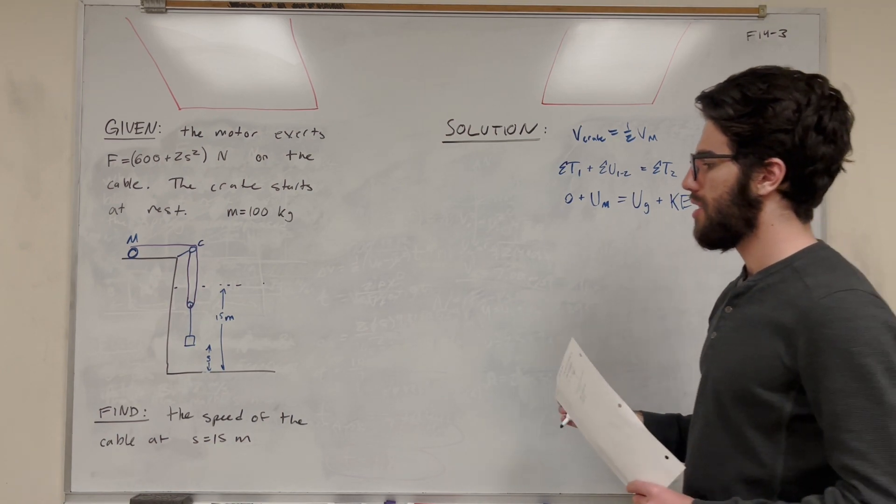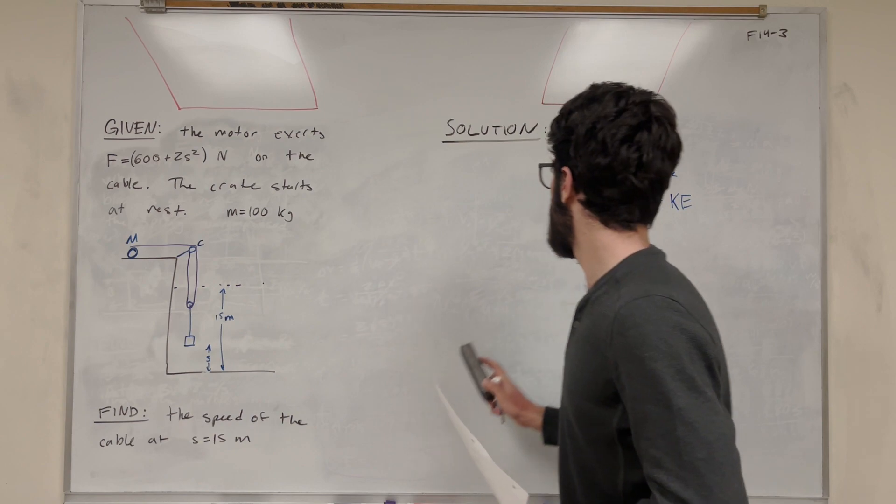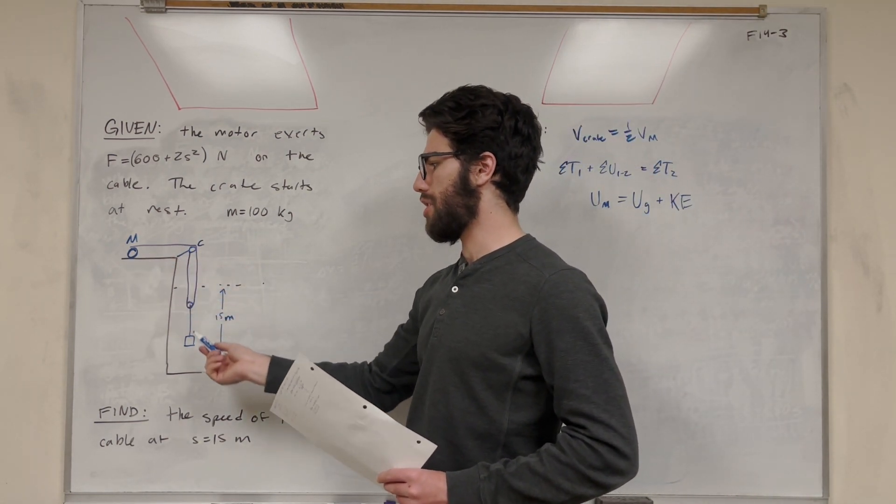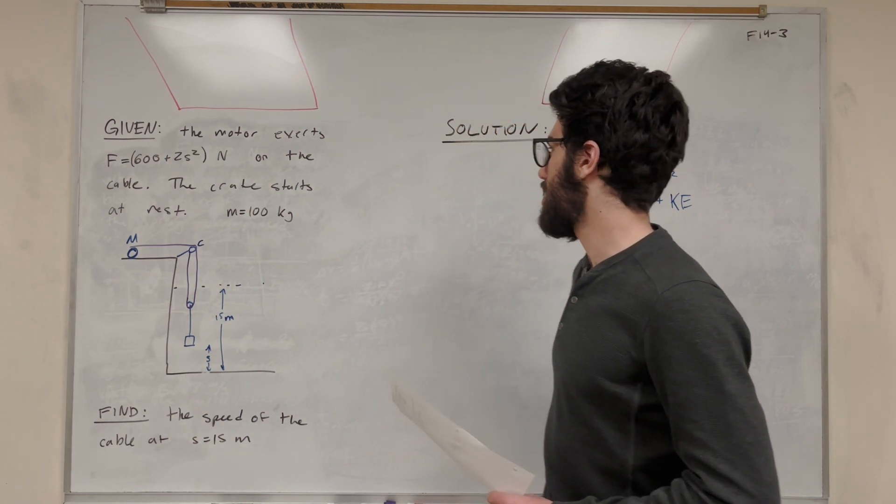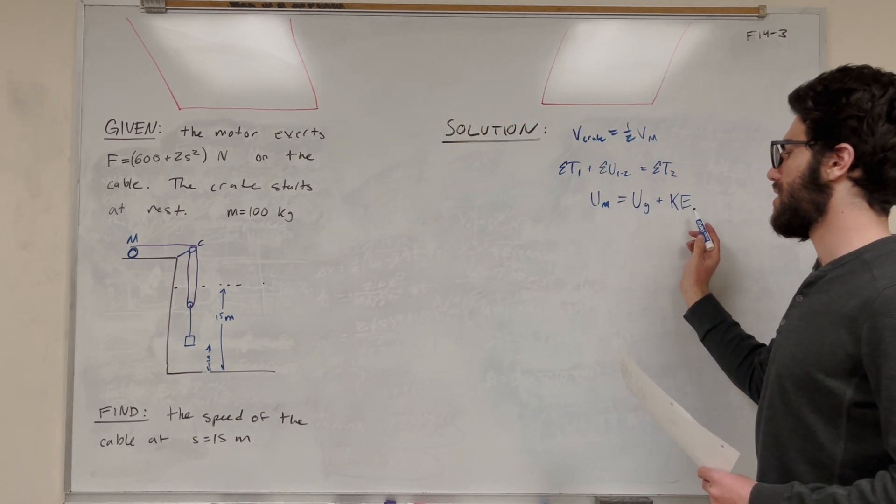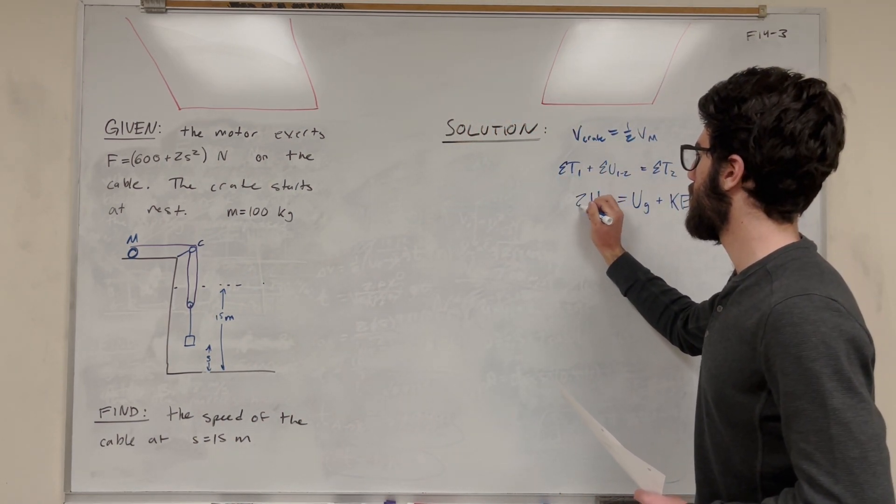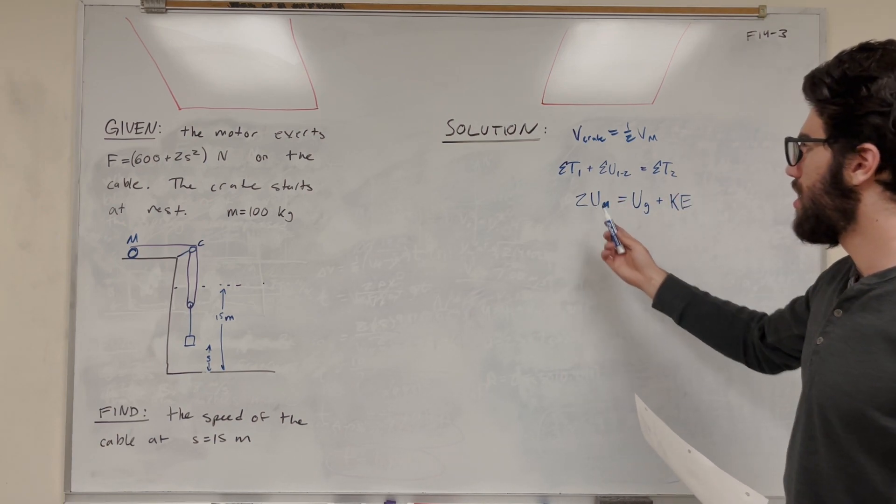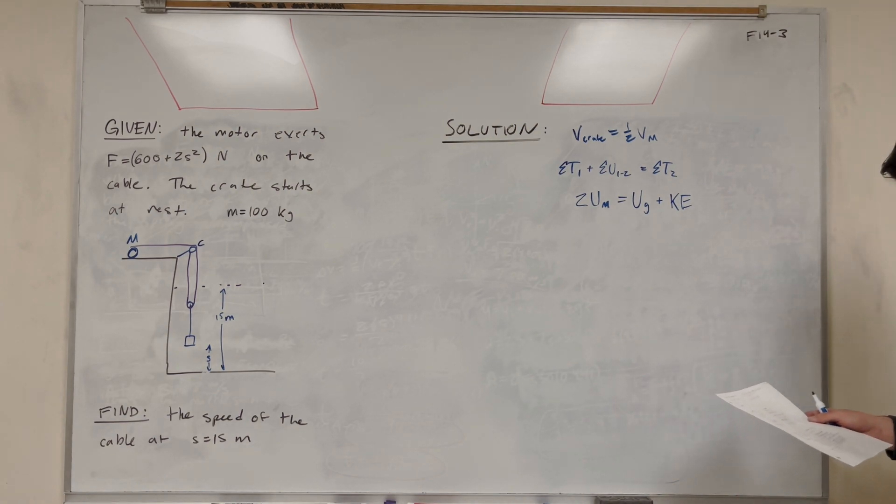So looking at this equation, well, the motor is pulling twice as much as the crate's moving. So that means that the motor is going to do twice as much work as the result seen, so we need to put a 2 here. Because we said that the velocity of the crate is half that of the velocity of the motor. So we're going to need to put a 2 down.